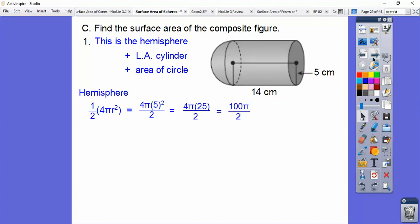We've got to square 5 first, and then multiply it times 4, and then divide by 2. So the hemisphere is 50π centimeters squared. The lateral area, remember, the lateral area is circumference times the height. From our lesson before,